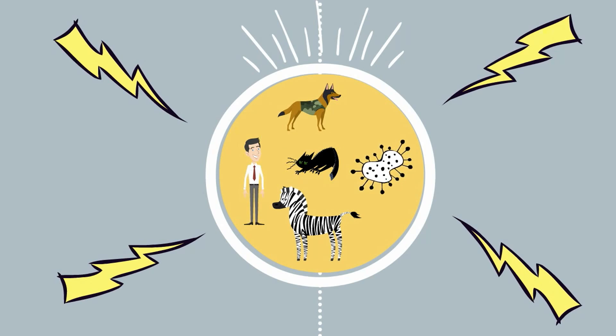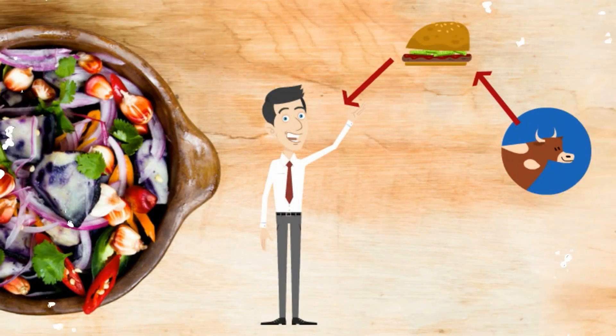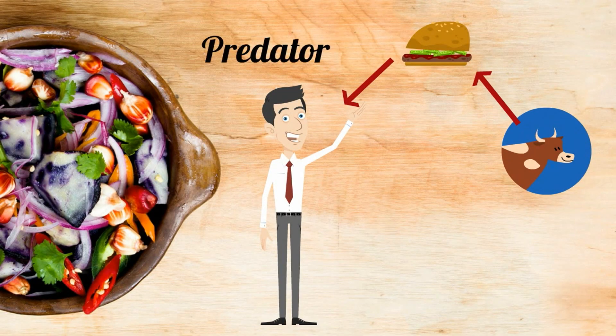A term used to describe this interaction is called predator and prey. The individual that is consuming the other is the predator, and the living thing that is consumed is the prey.